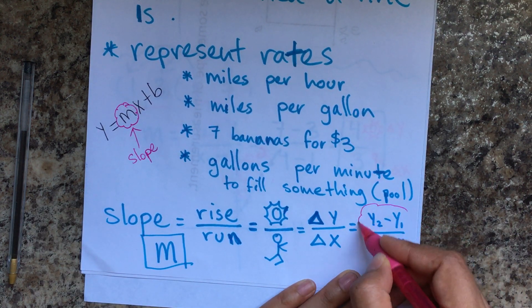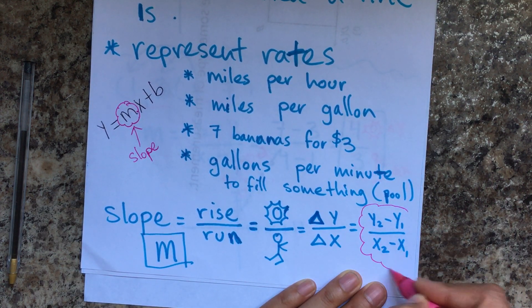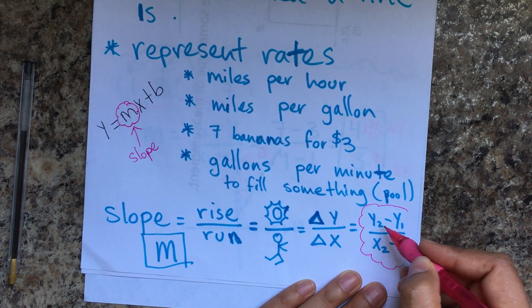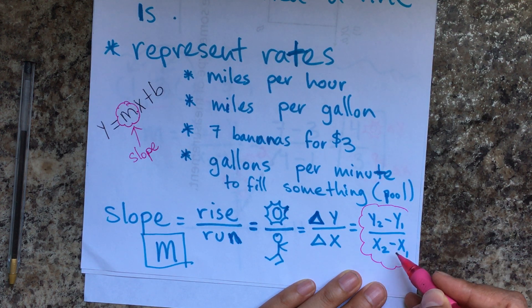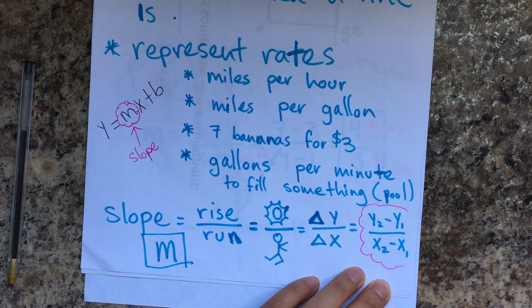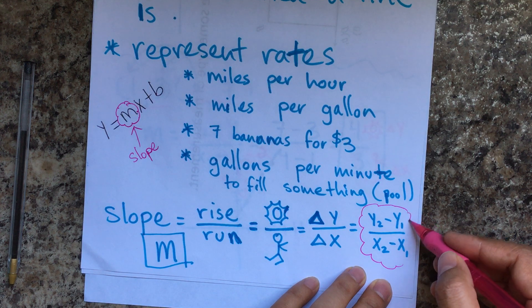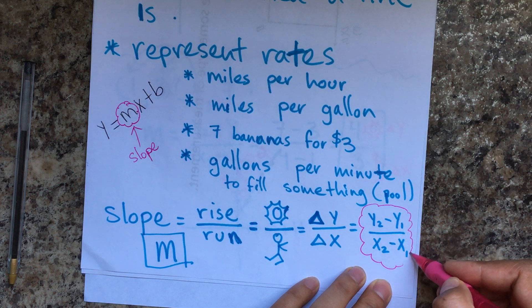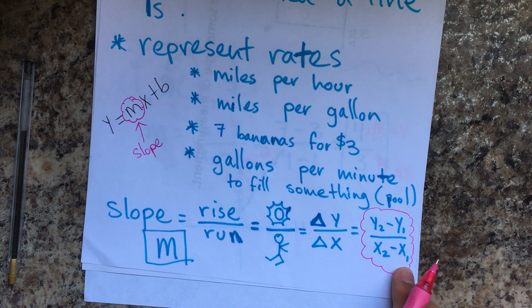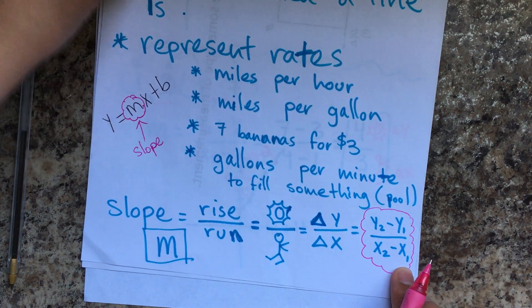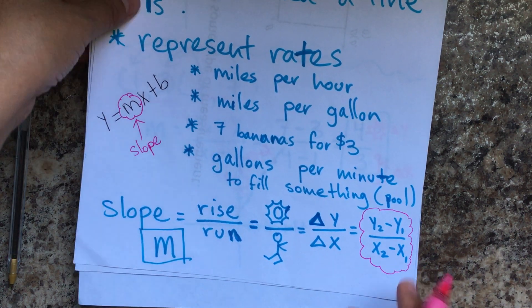They also say this is the change of y over the change of x. The formula is y2 minus y1 over x2 minus x1. That's what we're going to use to find the slope of different points.